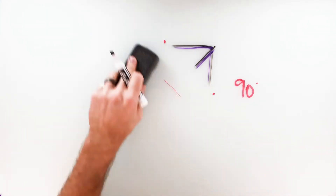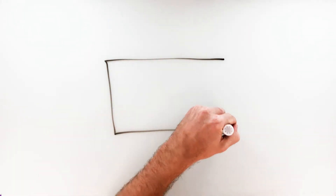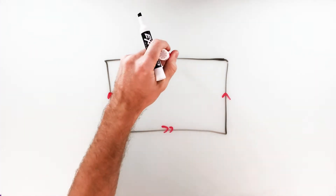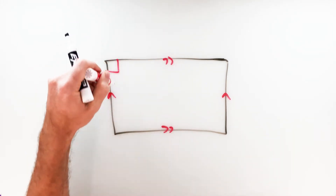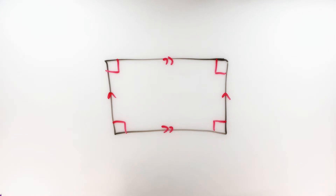Those are the two properties specific to rhombuses. Let's move on to the rectangle. The definition of a rectangle is a parallelogram with four right angles — both pairs of opposite sides are parallel, and all four angles are right angles. Note that a square is also a rectangle, so this property also applies to a square.